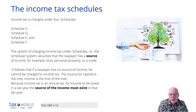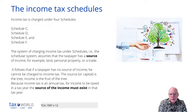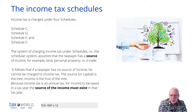The important thing to note about the system of charging income tax under the schedules is that it assumes that the taxpayer has a source of income — for example, land, personal property, or a trade. Therefore it follows that if you don't have a source of income, you cannot be charged income tax. The source of the income is the tree, and income is the fruit of the tree.